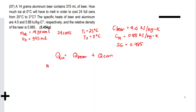So: M_ice times L_F (positive, since it absorbs heat) equals the heat. The problem states only melting — the temperature of the ice does not change. Since it melted, it absorbed heat, so this is positive. Equals negative Q_beer plus negative Q_can, for all 24 cans — multiply by 24.